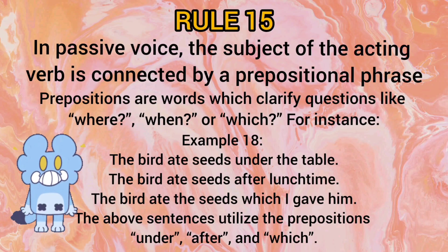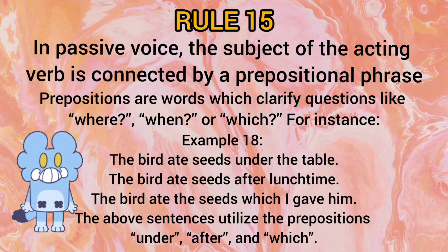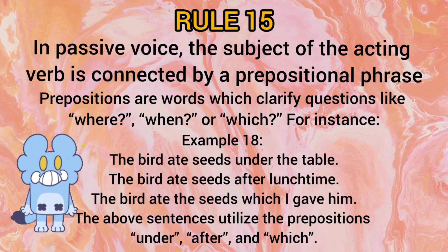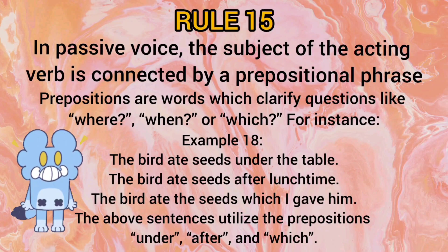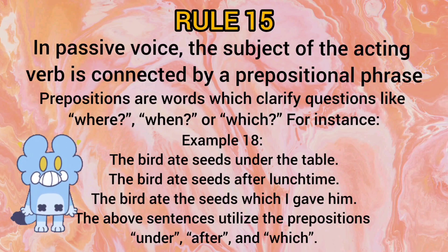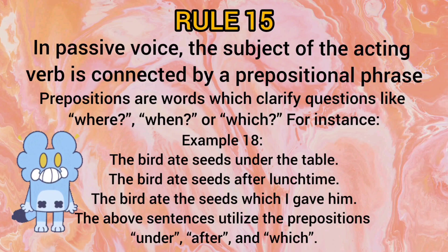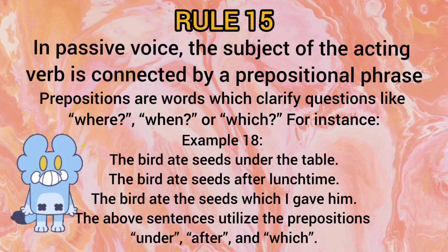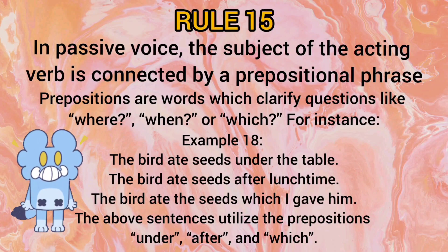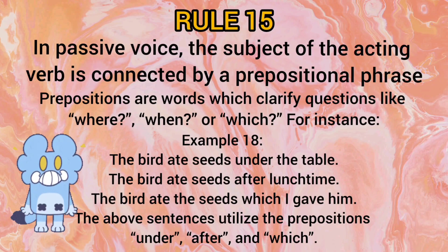Rule number 15: In passive voice, the subject of the acting verb is connected by a prepositional phrase. Prepositions are words which clarify questions like where, when, or which. For example: 'The bird ate seeds under the table,' 'The bird ate seeds after lunch time,' 'The bird ate seeds where I gave him.' These sentences use the prepositions 'under,' 'after,' and 'where' — indicating the location or condition of the action.